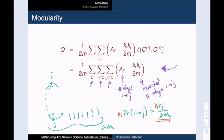So we've done it! Each summand compares the actual number of edges between i and j with the expected number of such edges in a randomly rewired network.